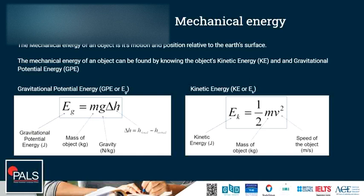The kinetic energy of an object can be found by multiplying half the mass of the object times its velocity squared.